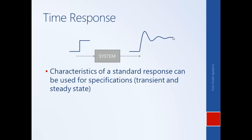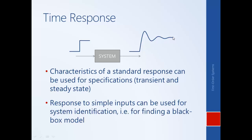If I'm designing a control system for a motor or a cruise control, how do I know if I've done a good enough job? The characteristics of this standard response are one basis for these requirements. Understanding these standard responses can also be used for black box modeling — recognizing a first or second order step response allows us to estimate parameters and fit a standard model to the system.